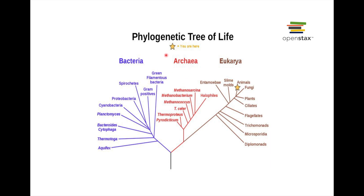Over time, as scientists started sequencing the DNA of archaea and looked at the organization of their molecules, they realized that archaea, although they look similar to bacteria, are actually more closely related to eukarya. Therefore, bacteria and archaea are totally different kinds of organisms in terms of their evolutionary history and the way they work, and are no longer grouped together. These are the three domains of life.